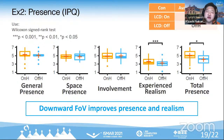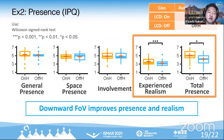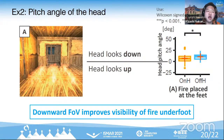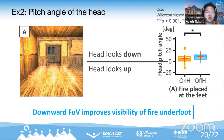The critical result of experiment two: the graph shows results for presence as measured by the IPQ questionnaire. The results are significantly higher in the items of experienced realism and total presence — in short, the downward field of view improves presence and sense of realism. Regarding the head pitch angle in area A, the results show that the head angle turns upward in the condition with increased downward FOV, meaning participants could see the small fire at their feet without moving their heads downward.